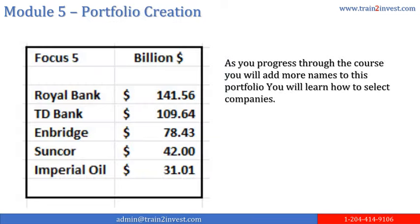Portfolio creation. Train2Invest will start you with what is known as the Focus 5 companies: Royal Bank, TD Bank, Enbridge, Suncor, and Imperial Oil. The chart shows their recent market capitalization. As you progress through the course, you will add more names to this portfolio and learn how to select companies that should be in your portfolio. The next slides will show what the profit potential is for trading these companies.